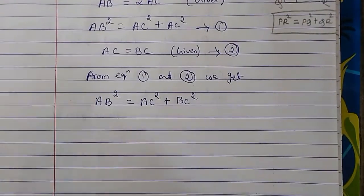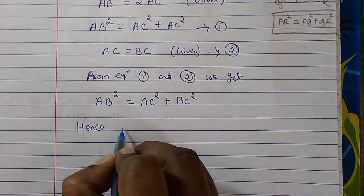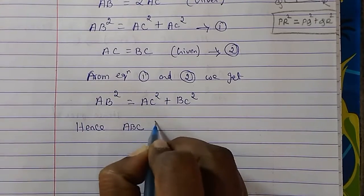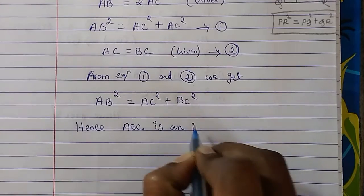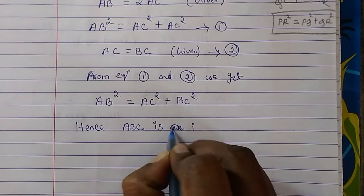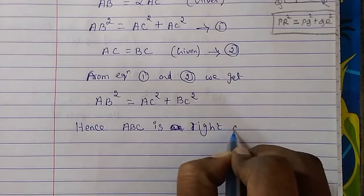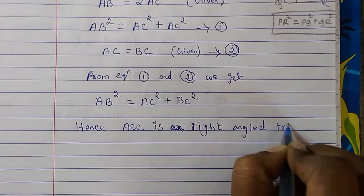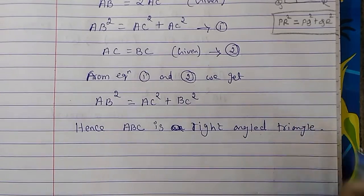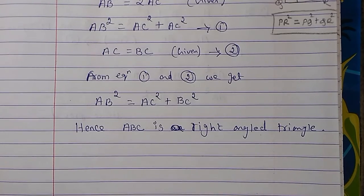Hence, ABC is a right angle triangle. I hope it is clear to you. Thank you and God bless you.